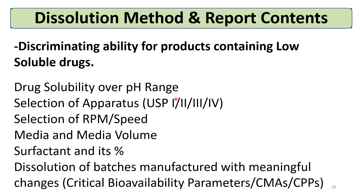The content of this section should include: drug solubility over the physiological pH range; selection of apparatus 1, 2, 3, or 4; selection of RPM or speed — such as 50, 60, or 75 RPM for the paddle apparatus and 50, 75, or 100 RPM for the basket apparatus; media and media volume; and if a surfactant is used, which type and what percentage, justified based on dissolution experiments.